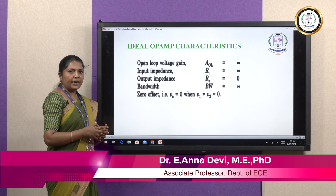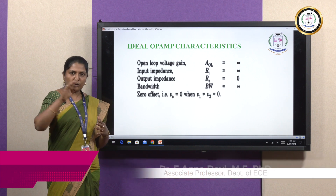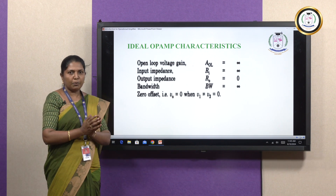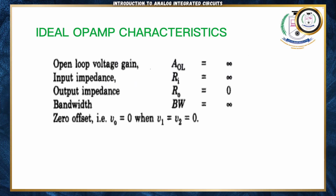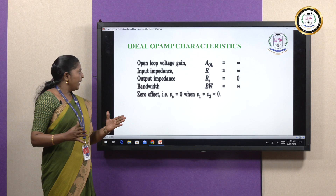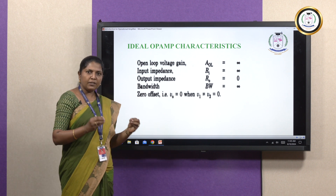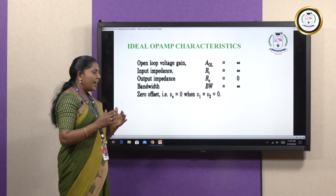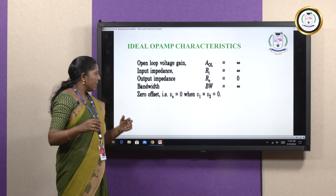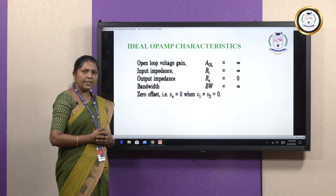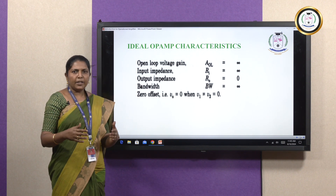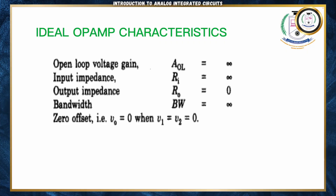The five ideal op-amp characteristics are: First, open loop gain is equal to infinity — that is, without feedback, the gain A_OL equals infinity. Second, the operational amplifier has high input impedance — the input impedance is infinity. Third, it has low output impedance, which equals zero. Fourth, bandwidth is infinity. Fifth, it has zero offset voltage — that is, if you are not giving any input voltage, the output voltage will be zero; when V1 = V2 = 0, Vout also equals zero.